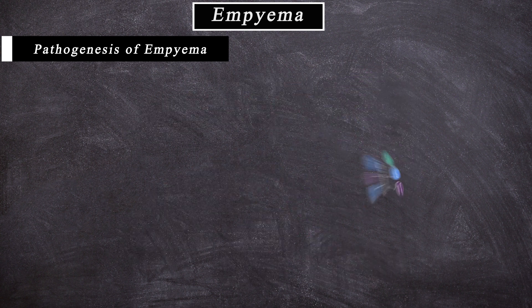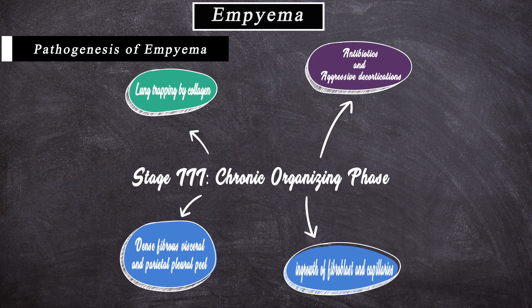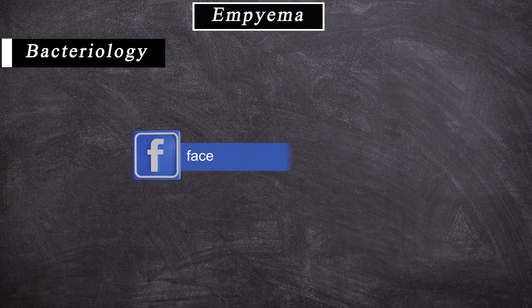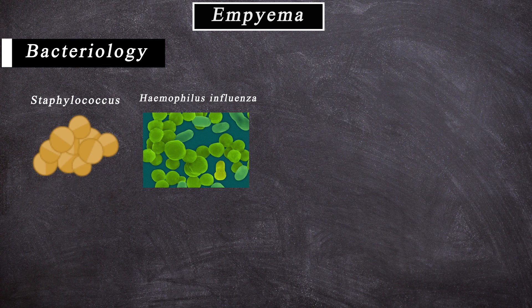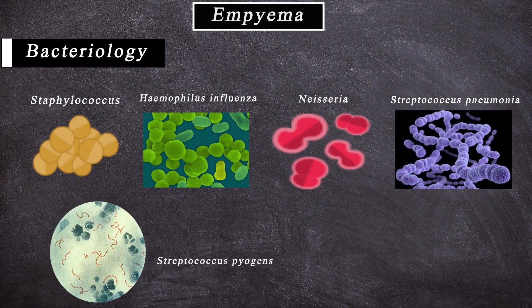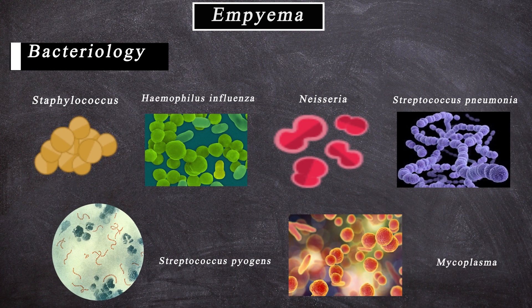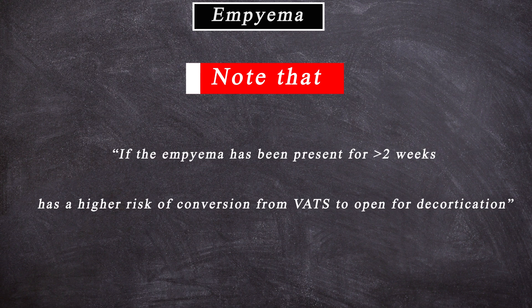Stage 2 treatment may also include plus or minus VATS decortication. Stage 3 is the chronic organizing phase, characterized by lung trapping by a collagen-dense fibrous visceral and parietal pleural peel, with ingrowth of fibroblasts and capillaries. This phase will need antibiotics and aggressive decortication, generally by thoracotomy. Many kinds of bacteria can infect the pleura or pleural fluid, including Staphylococcus, Haemophilus influenzae, Gram-negative bacilli, Streptococcus pneumoniae, Streptococcus pyogenes, and Mycoplasma. Note that if the empyema has been present for more than two weeks, it has a higher risk of conversion from VATS to open for decortication.